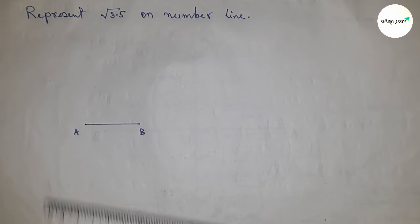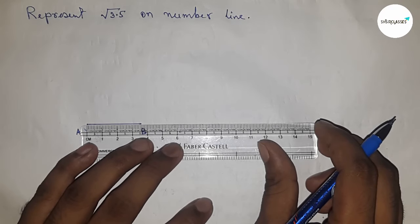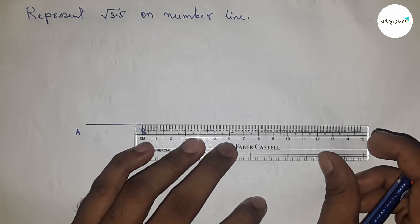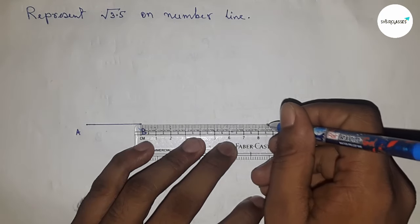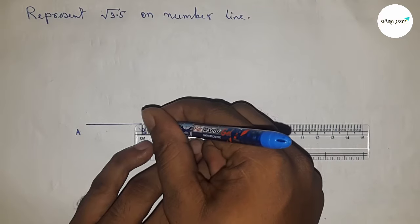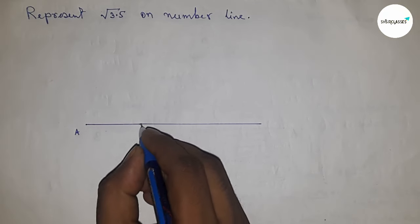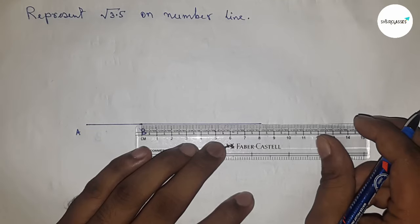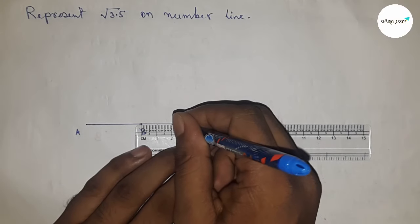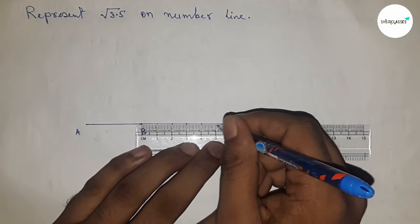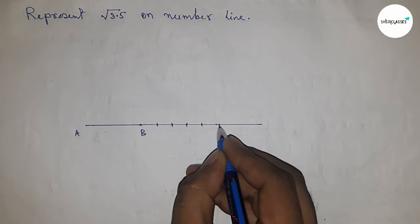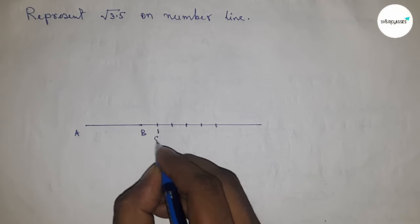Next, increase the line AB up to any length. Then mark the numbers on the line.